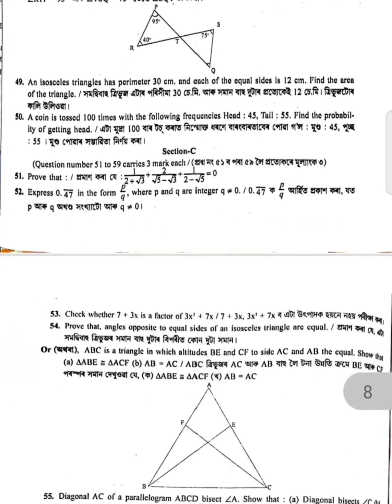Prove that 1 divided by (2 plus root 3) plus 2 divided by (root 5 minus root 3) plus 1 divided by (2 minus root 5) equals zero. Check whether 7 plus 3x is a factor of 3x squared plus a given polynomial.